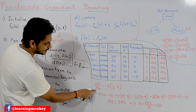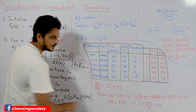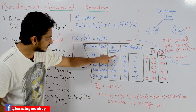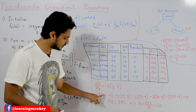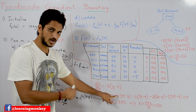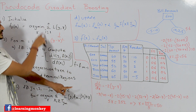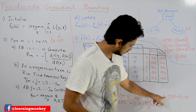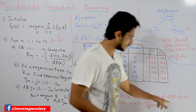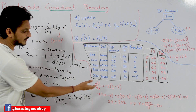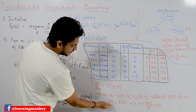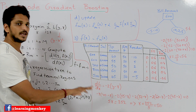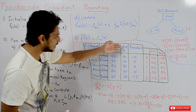Differentiating (y − gamma)² with respect to gamma gives −2(y − gamma). Substituting all data points and summing: −2(40 − gamma) − 2(55 − gamma) − 2(52 − gamma) − 2(60 − gamma) − 2(45 − gamma) = 0. Solving this gives gamma = 252/5 ≈ 50, which matches the mean value from our example.